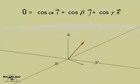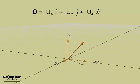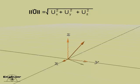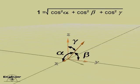Notice that the directional cosines specify the unit vector. Since the magnitude of a unit vector is 1, the square root of the sum of the squares of the components equals 1. And so the square root of the sum of the squares of the directional cosines equals 1.